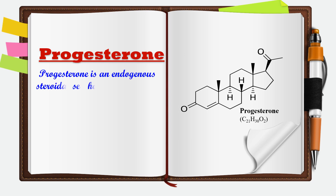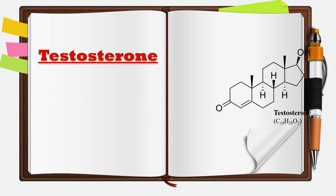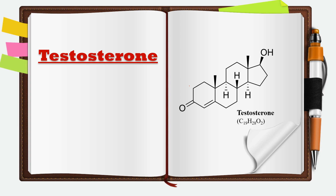The next steroid hormone is progesterone. It is also secreted by the ovary and is responsible for the menstrual cycle, pregnancy, and embryogenesis. It is a 21 carbon atom hormone with molecular formula C21H30O2, and as you can see, the structure of progesterone is just in front of you.